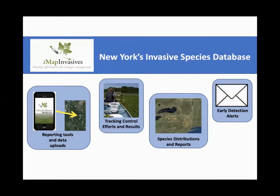IMAP provides incredible functionality. Today we're focusing on the mobile app for reporting presence and absence. For more advanced mobile features — treatment and polygon work — email the IMAP box. The system went live in April as IMAP3, a complete redesign. Some features are still coming online, but email alerts just went live five days ago. If you want to sign up for species alerts for your county or PRISM, you can do that online now.